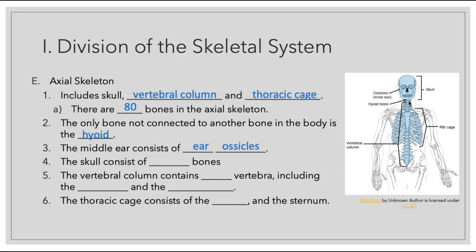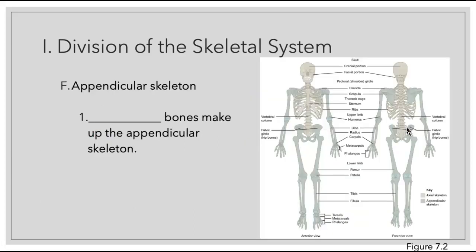The skull will consist of 22 bones. Our vertebral column will contain 24 vertebrae, including the sacrum at the area of the pelvis and the coccyx at the very tip. The thoracic cage will consist of the ribs and the sternum anteriorly. The appendicular skeleton is made up of 126 bones — the bones that make up the appendages, hence the name appendicular skeleton.